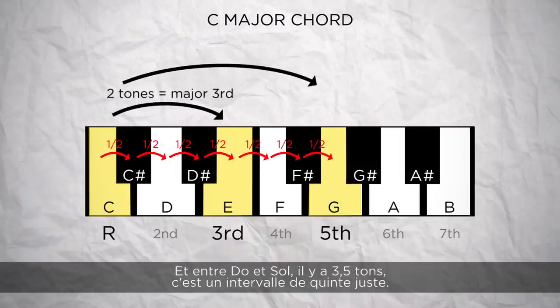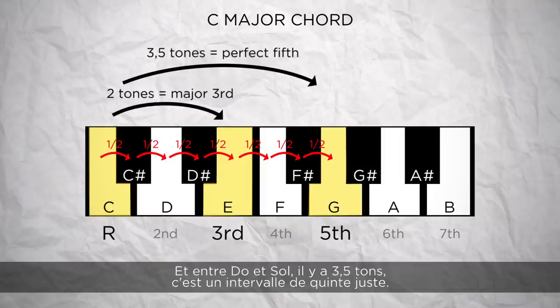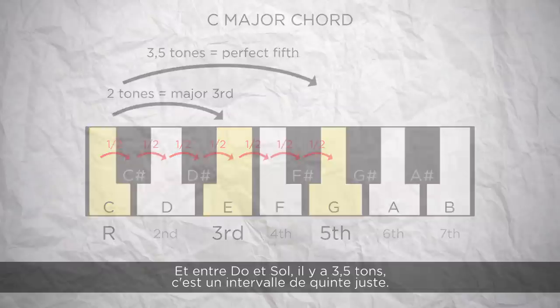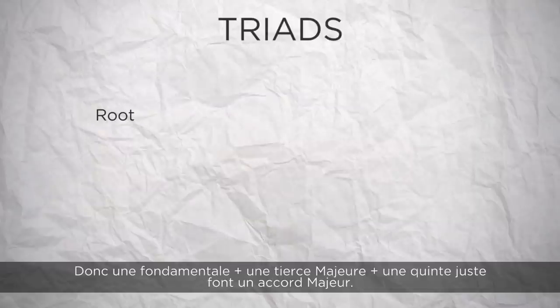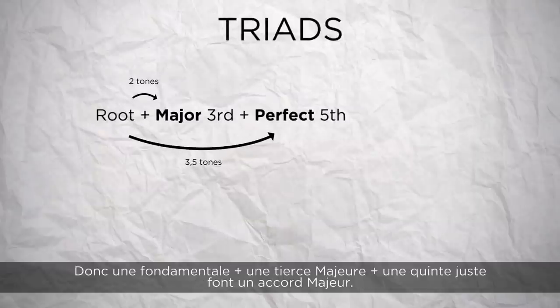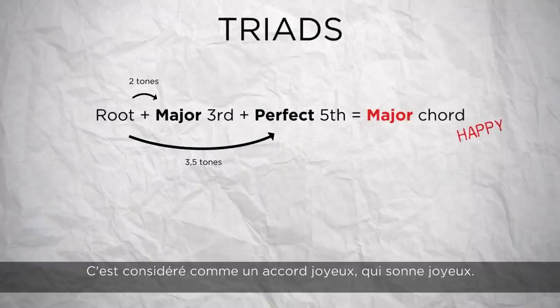And between C and G, there is an interval of three and a half tones, which is an interval of a perfect fifth. So a root note plus a major third plus a perfect fifth makes a major chord, which is considered to be a happy chord.